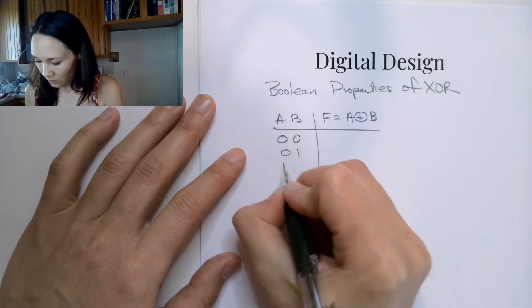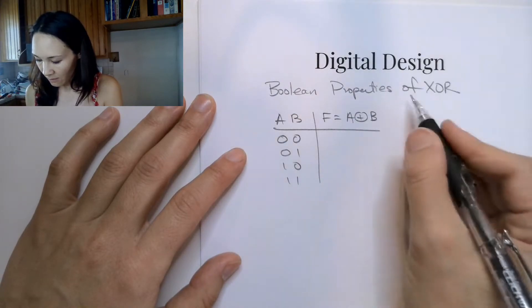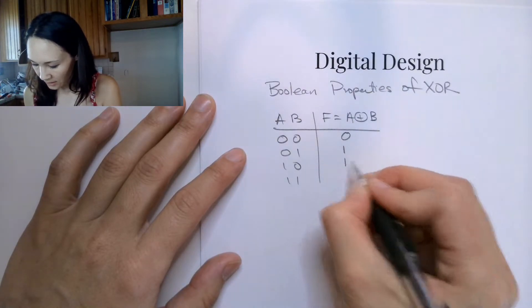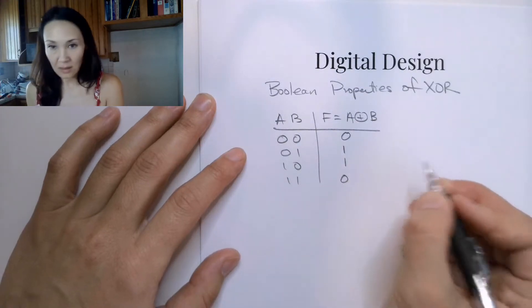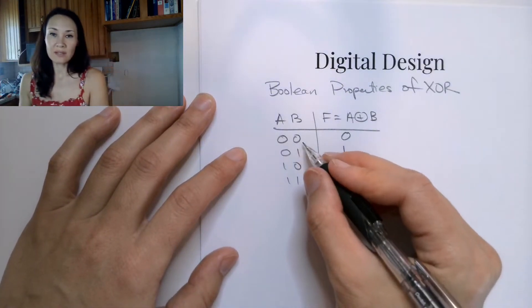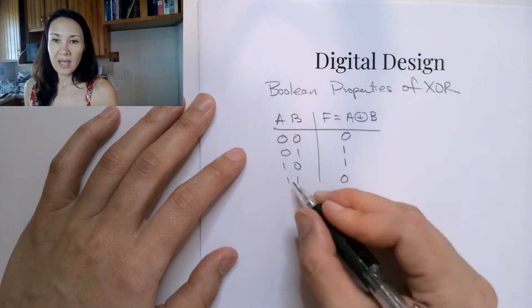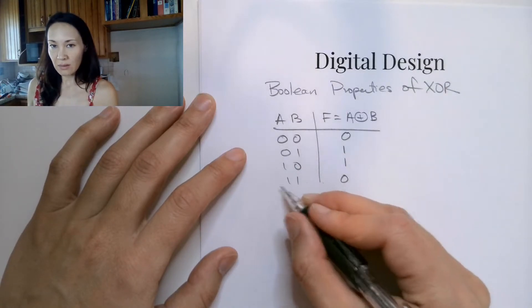0, 0, 0, 1, 1, 0, 1, 1. XOR is only going to be true when these inputs are different. Okay, so we have 0 if they're the same. If they're 0 and 0, and the output's 0 if these are both 1.